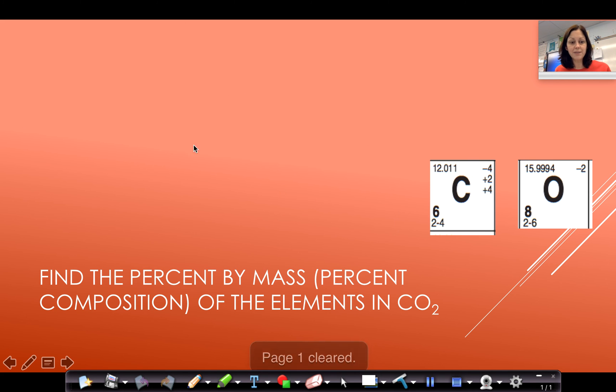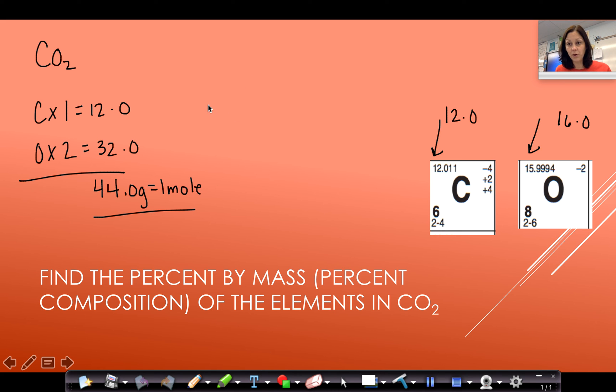I want to do one more example for CO2, the mass percent or percent compositions of the elements in CO2. My first step is to do C times 1 and O times 2. Again, in our class, we've rounded these to the nearest tenth. So we're going to do 12.0 plus 32.0. And we're going to get the gram formula mass, which is 44.0 grams equals 1 mole.